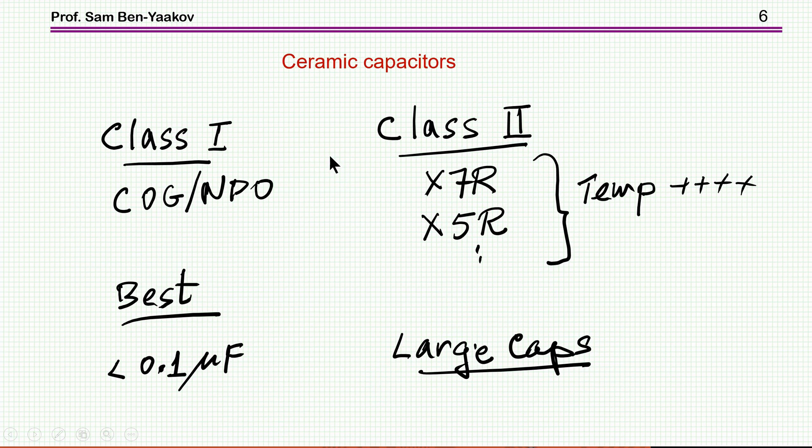Going back to ceramic capacitors, we have the class 1 and class 2, which are the primary groups of ceramic capacitor. Class 1 is a very good material, or group of material, the C0G, or NPO. These are the best capacitors, best ceramic capacitors, very stable, perhaps a little bit larger than the class 2, because the dielectric coefficient is smaller, but still, they are small.